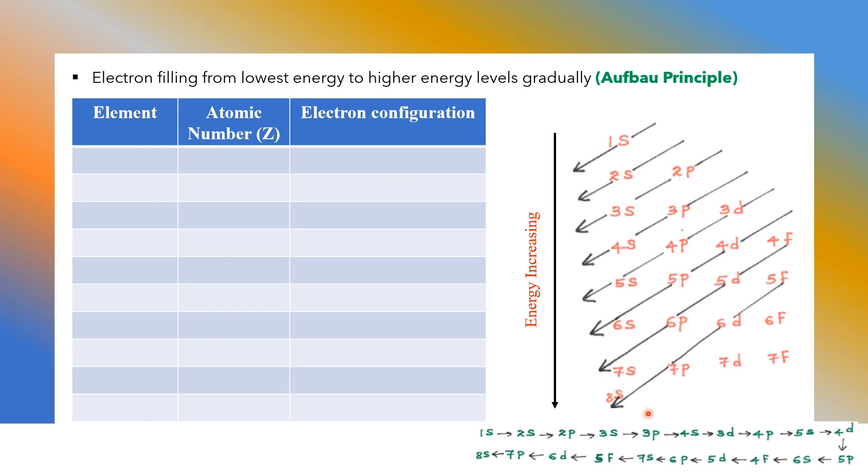Now let's start writing electron configuration from hydrogen, the first element. Hydrogen, atomic number 1, 1 electron, filled into the lowest energy level 1s1. So if we write the configuration like this, the 1 meaning is n number is 1, energy level is 1. S is s orbital. Superscript 1 is how many electrons in that s orbital. Next element helium, atomic number 2, 2 electrons, 1s2. And then lithium, 3 electrons. After completely filled 1s, next energy level is 2s, 2s1. Then beryllium, 4 electrons, 1s2, 2s2.